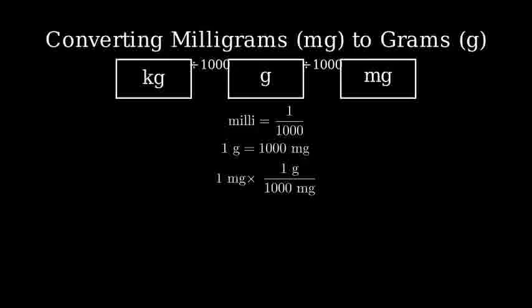Notice how the milligrams cancel out, leaving us with grams. Now let's solve this. When we multiply one by one and divide by one thousand, we get 0.001 grams.